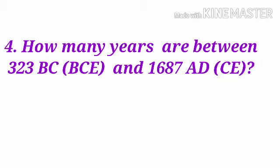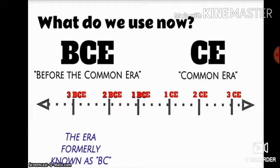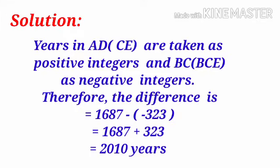How many years are between 323 BC and 1687 AD? Years in AD are positive integers and BC years are negative integers. To find the difference: 1687 minus (minus 323) equals 1687 plus 323, since minus into minus gives plus, which equals 2010 years.